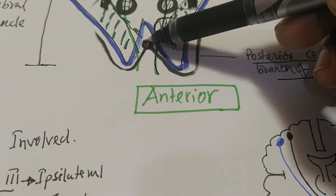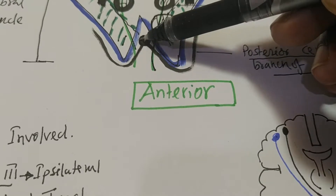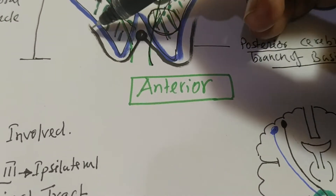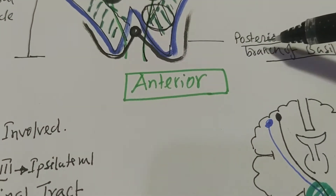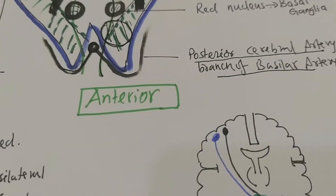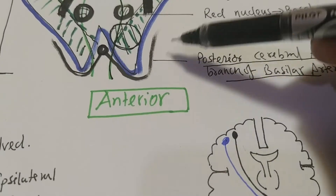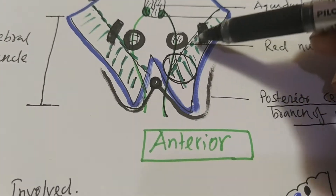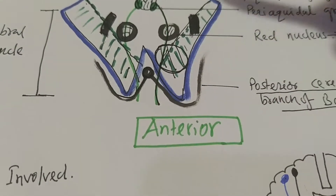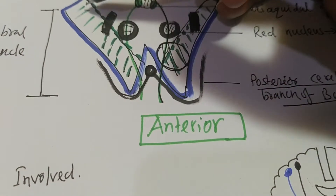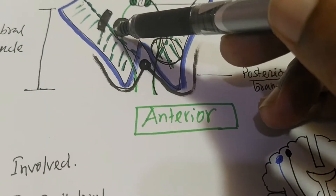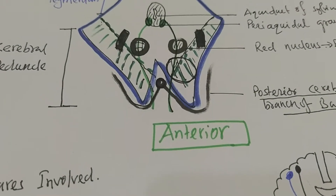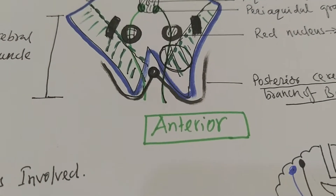Very anteriorly, this is the basilar artery, and from the basilar artery two branches emerge on each side. This is called the posterior cerebral artery — a branch of the basilar artery that supplies the posterior part of the cerebrum. This greenish part is called the cerebral peduncle, and through this cerebral peduncle the corticospinal and corticobulbar tracts go down.